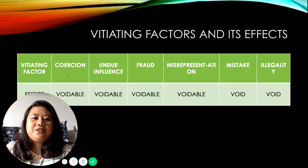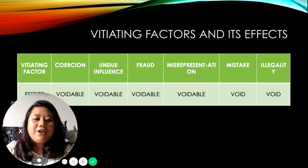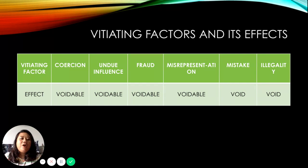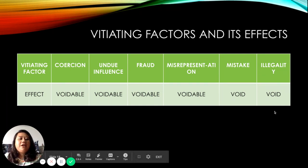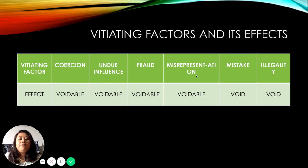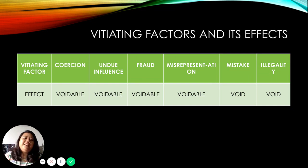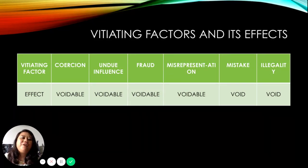To recap: vitiating factors and their effects — coercion, undue influence, fraud, and misrepresentation all result in a voidable contract, meaning the innocent party has the choice to stop the contract or proceed. Void is where even though both parties want to proceed, they cannot, because the contract is cancelled from the very beginning. You must understand what the vitiating factors are and what their effects are.